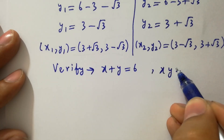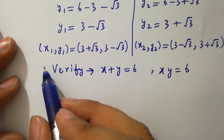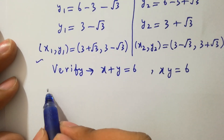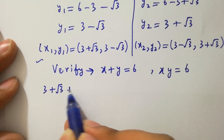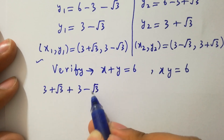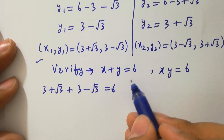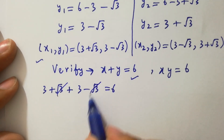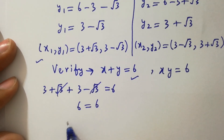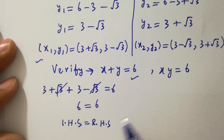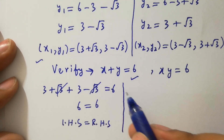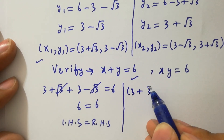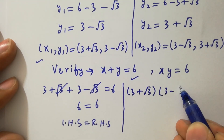In the next step, I am going to verify x plus y equals 6 and xy equals 6. Put the value of x and y: (3 plus root 3) plus (3 minus root 3) equals 6. The root 3 terms cancel, leaving 3 plus 3 equals 6, so left hand side equals right hand side. For xy equals 6, put x equals 3 plus root 3 and y equals 3 minus root 3.